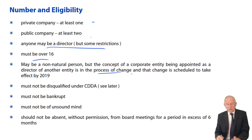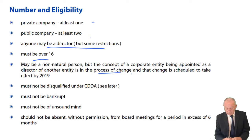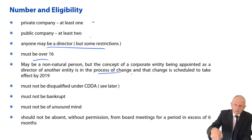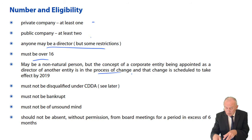A non-natural person may be a director, but the concept of a corporate entity being appointed as a director is in the process of change, scheduled to take effect by 2019. Directors must not be disqualified under the Company Directors Disqualification Act, must not be bankrupt — you can't appoint a bankrupt, and a director who becomes bankrupt cannot continue to act as a director.